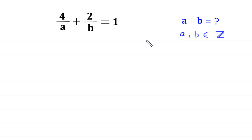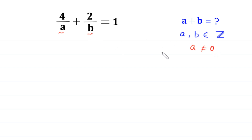Since a is in the denominator, a cannot be equal to 0, and b is in the denominator, b cannot be equal to 0.